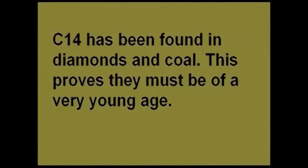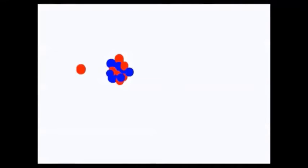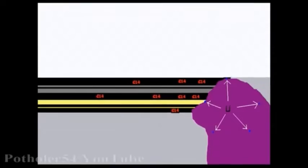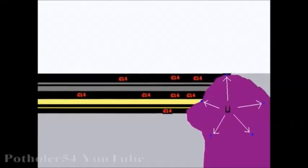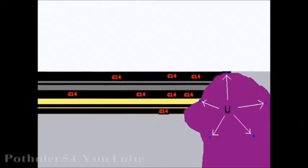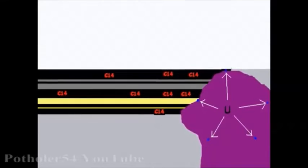But carbon dating isn't used on diamonds and coal, and for very good reason. As I explained, C14 is formed when neutrons collide with nitrogen atoms. The C14 used in carbon dating originated in the atmosphere. But you can also get it deep underground, in places where decaying uranium is giving off neutrons. Coal and diamonds are made of carbon, so you'd expect to find higher levels of C14 in coal and diamonds close to rocks that contain uranium, and much lower levels away from those rocks. And that's exactly what we do find.